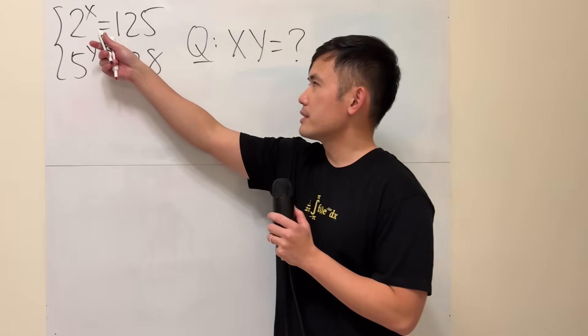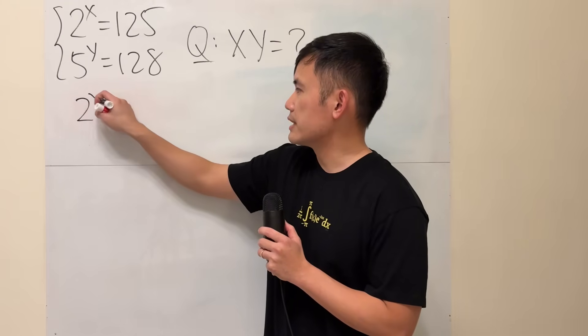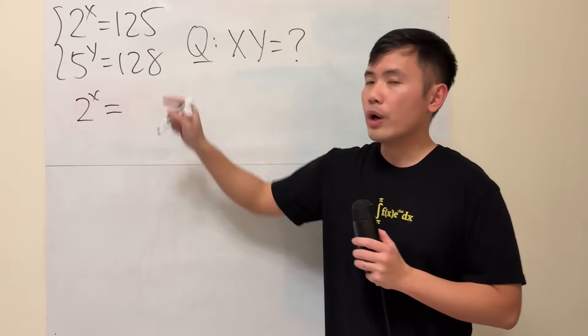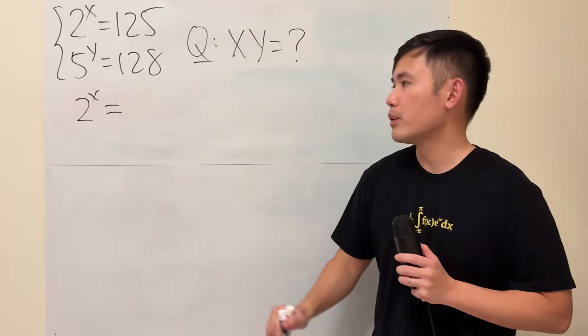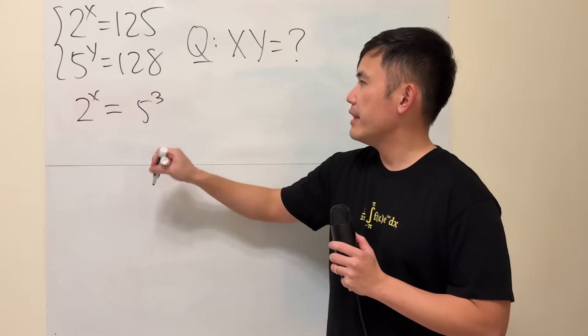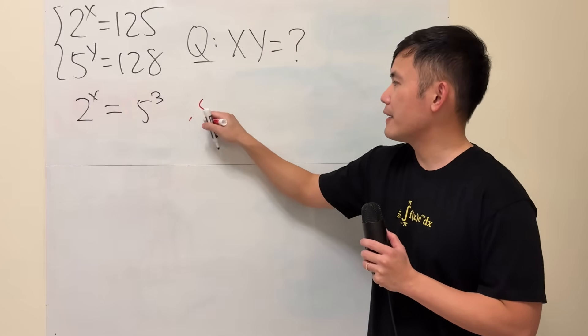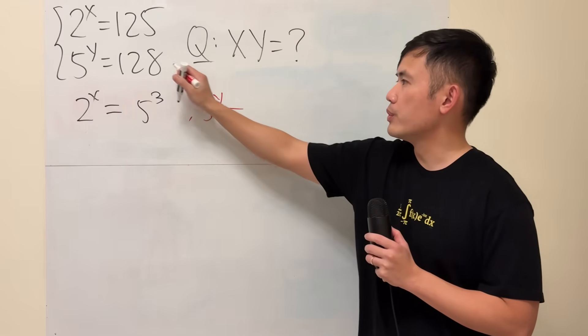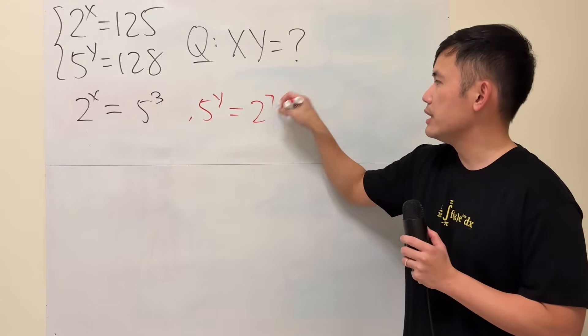Here we go. First, let's write this as 2 to the x power being equal to 125, which is the same as 5 to the 3rd power. And then, for this right here, we have 5 to the y being equal to 2 to the 7th power.